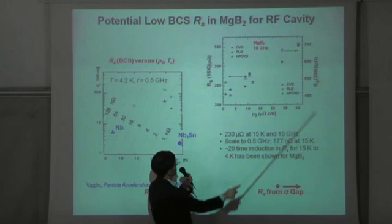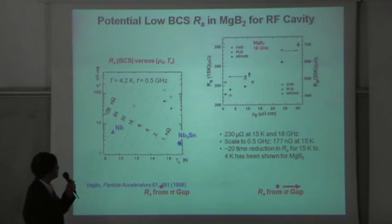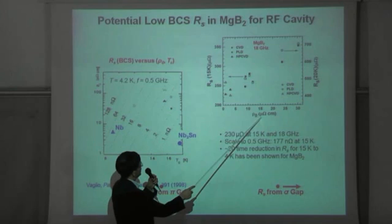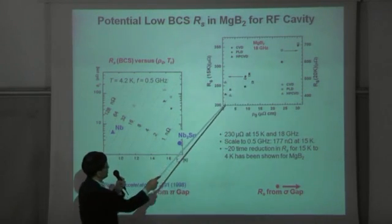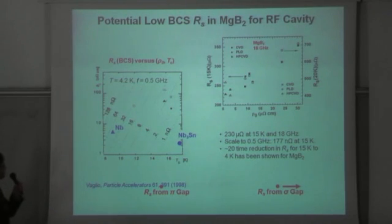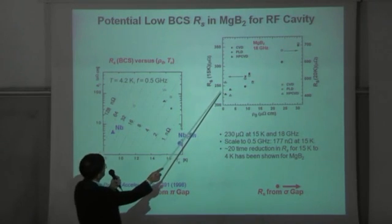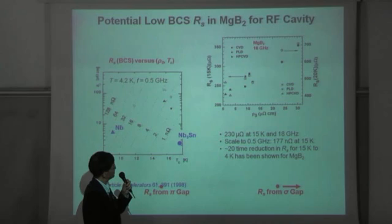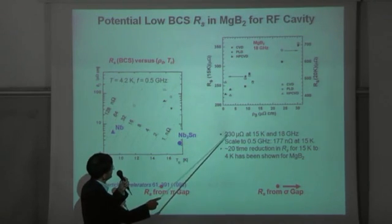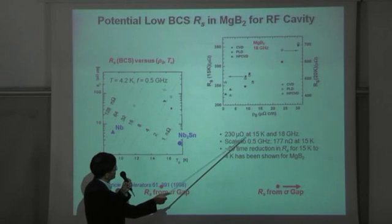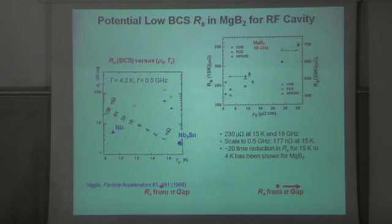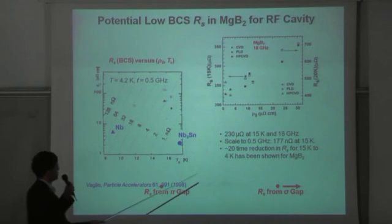And so basically you can see that as a function of the residual resistivity, the surface resistance decreases on the residual resistivity decrease. And so if we look at the film that we have produced, in this data it's about 1 micro-ohm centimeter, and we have 230 micro-ohm at 15 Kelvin and 18 gigahertz. So if you use omega squared to scale it to 500 megahertz, that will be like 180 nano-ohm at 15 Kelvin.